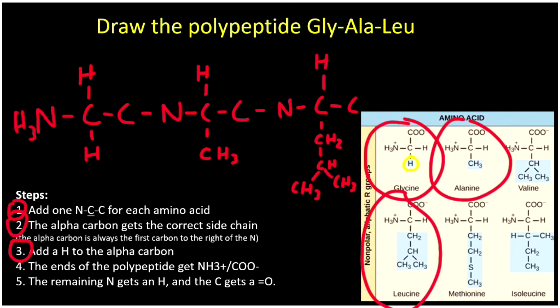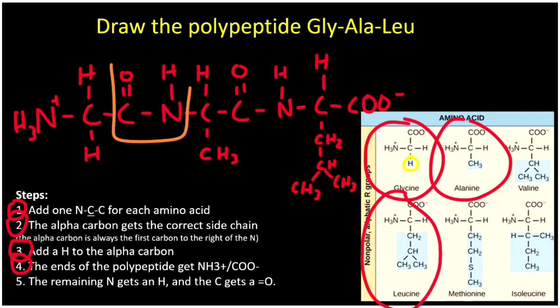The ends of the polypeptide get their charged groups: NH3+ on the nitrogen side and COO minus on the carbon side. Step five: the remaining carbons each need a double bond to an oxygen, and the remaining nitrogens each get a hydrogen. We end up with two peptide bonds linking our three amino acids. That's how we draw a polypeptide by following these simple five steps. Thanks for watching this episode of Real Chemistry.